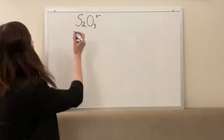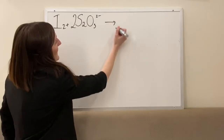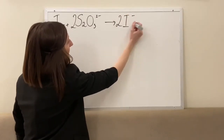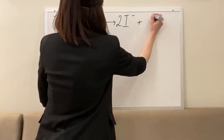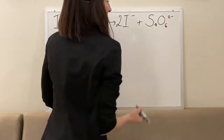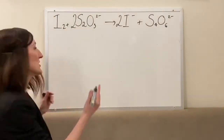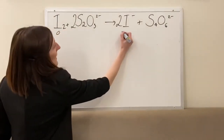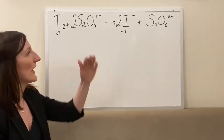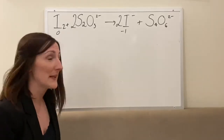Let's get the equation first of all. We've got iodine, and it can reduce iodine to iodide ions, and we also get a tetrathionate ion produced. If we add oxidation numbers just to double check — our iodide — we can see that iodine is being reduced because there's a reduction in oxidation number, and it's the thiosulfate that is doing this.